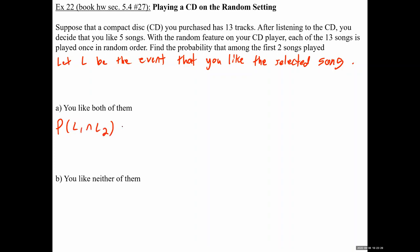Find the probability that among the first two songs you like both. The notation is P(L1 AND L2) — like the first and like the second. A student asked: if we already wrote the event definition once, do we have to rewrite it for each part? No. Once you write it on the paper, I'll use it for that entire problem. What I like to do is read all the parts of the question, write all the letters I need at the beginning, and then they're all there.